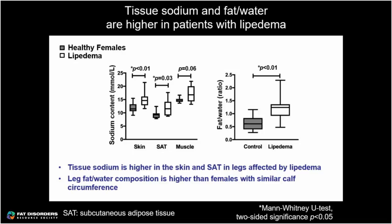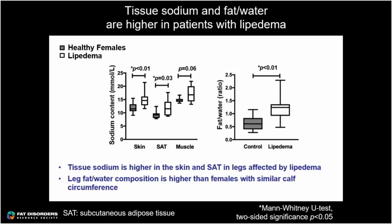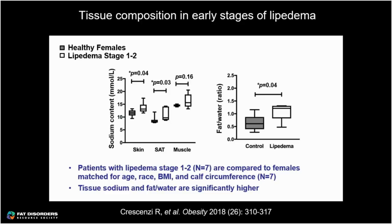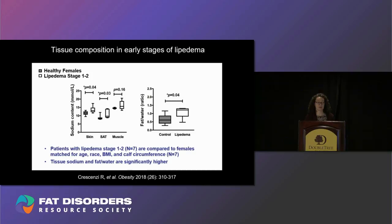In a subanalysis, we looked at patients with earlier stage one to two lipedema compared to females with similar age, race, BMI, and calf circumference. We found similar trends: tissue sodium was significantly increased in the skin and subcutaneous adipose tissue, and the fat-to-water ratio was significantly higher even in stage one to two lipedema. This suggests these tissue components are already representative of lipedema at its earliest stages.